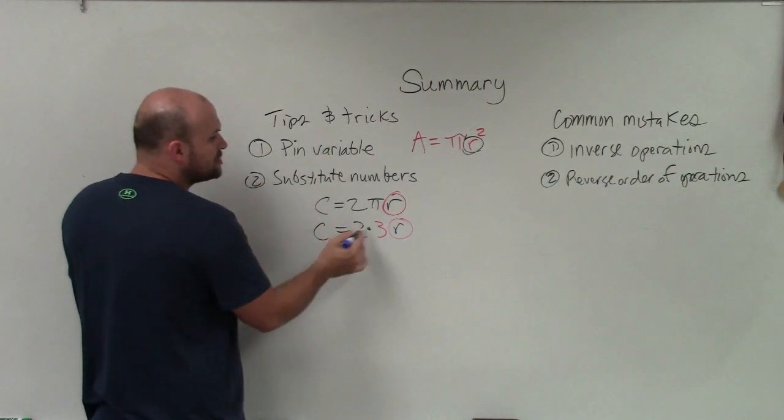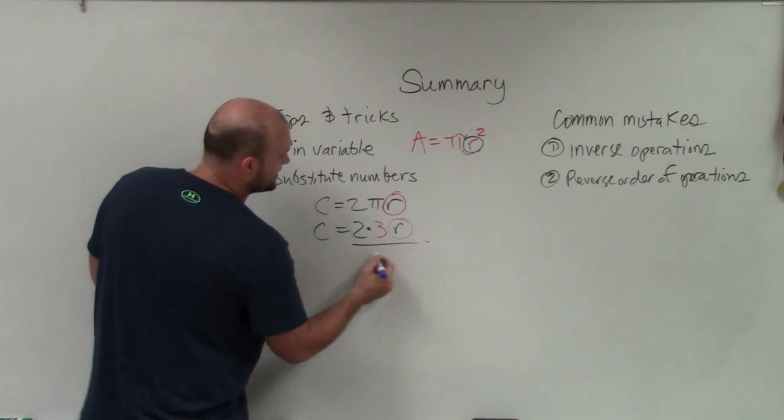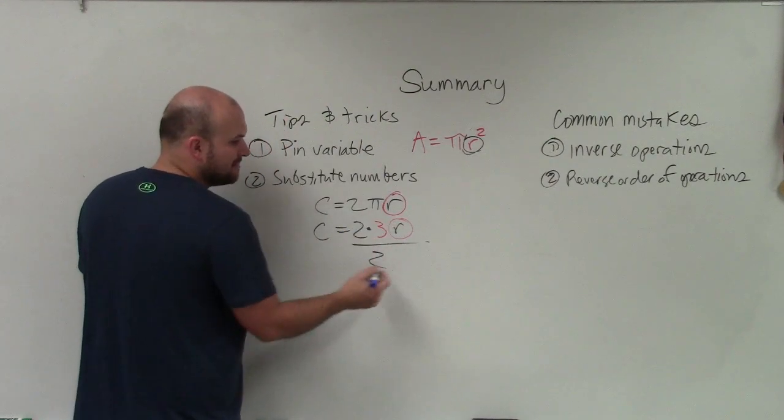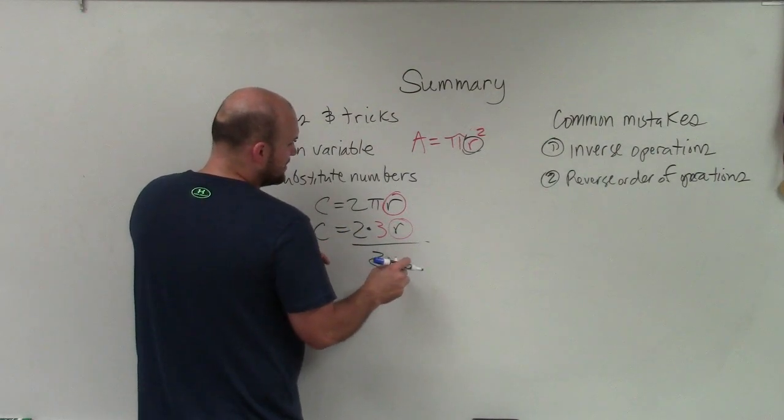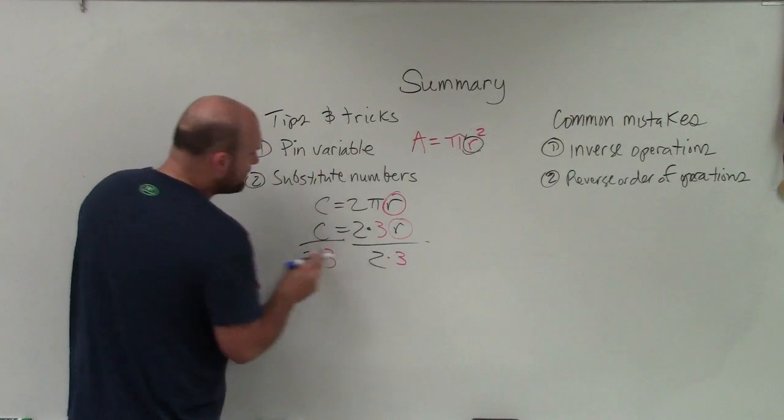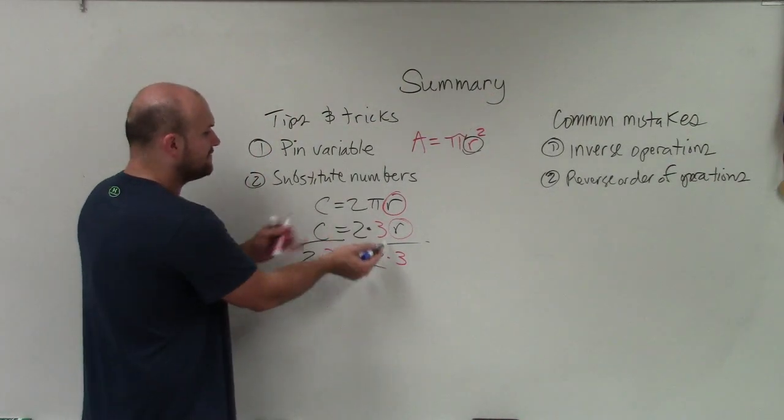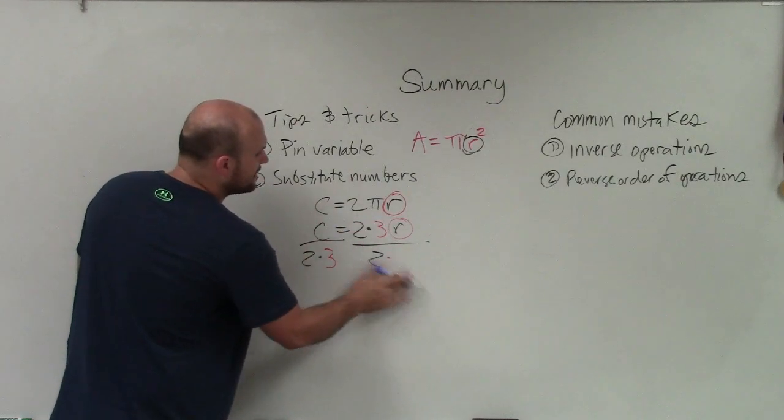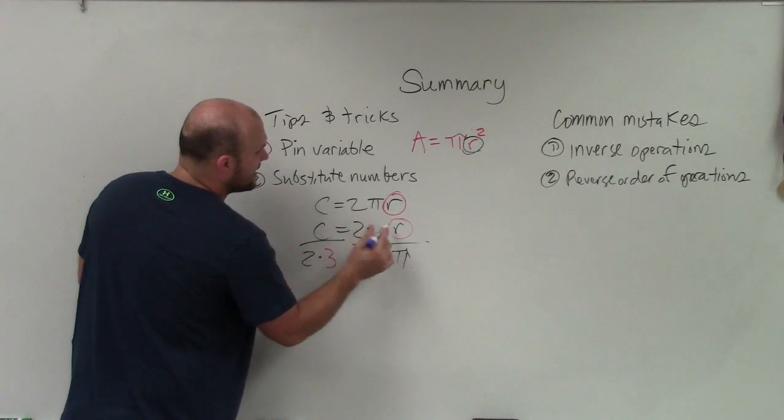Well you can say, oh, okay, well 2 is being multiplied by r, so I'm going to divide by 2. And 3 is being multiplied by r, so I'm going to divide by 3. And you have to do that on both sides. So that might make sense and say, oh, okay, well if 3 was pi, then really what I need to do is divide by pi on both sides.